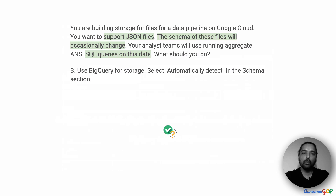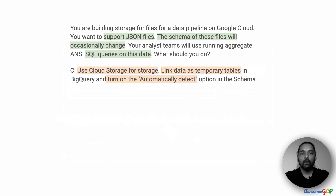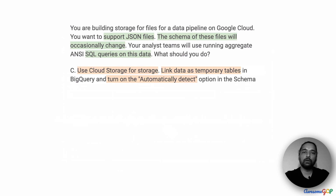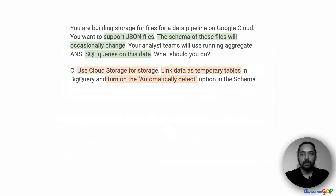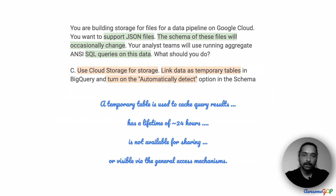Let's bank option B and move on to option C. Option C suggests that we use Cloud Storage, and then from BigQuery you link the data in the file on Cloud Storage as a temporary table. We can also turn on the auto-detect option in the schema. Cloud Storage is able to store JSON files — it can store any kind of data. So using Cloud Storage is not a bad idea, and turning on auto-detect would also work.